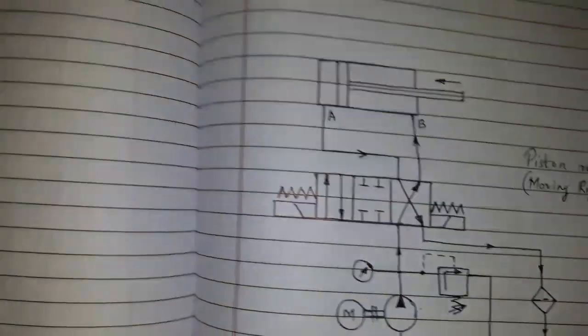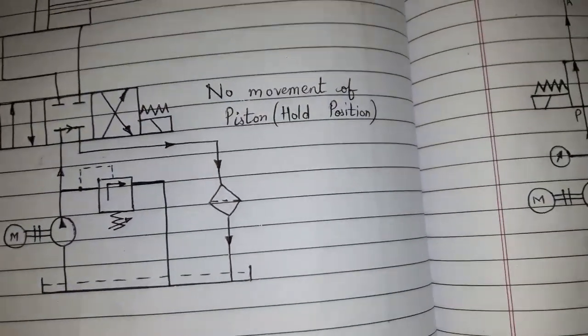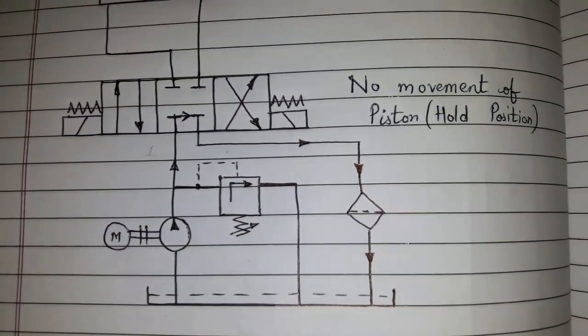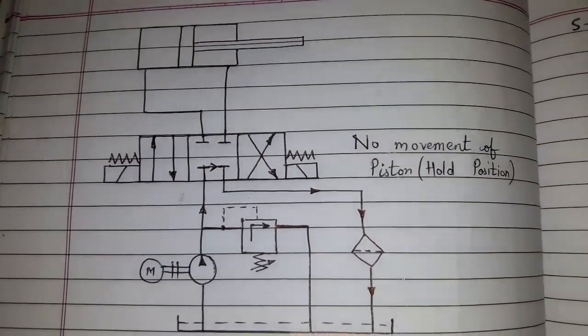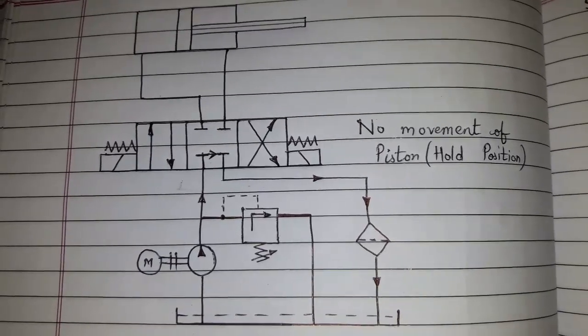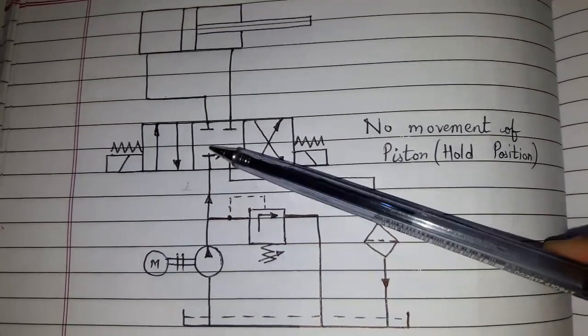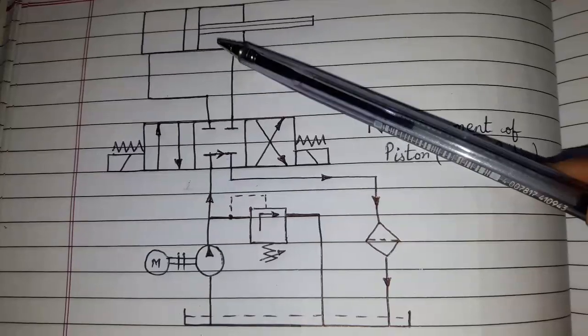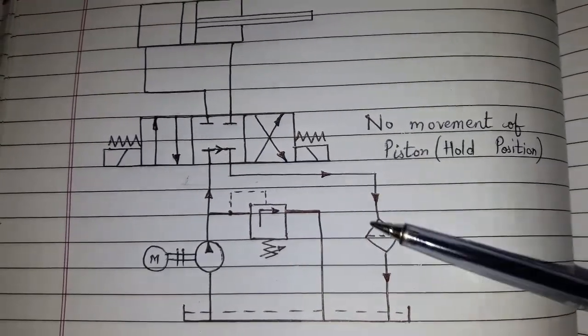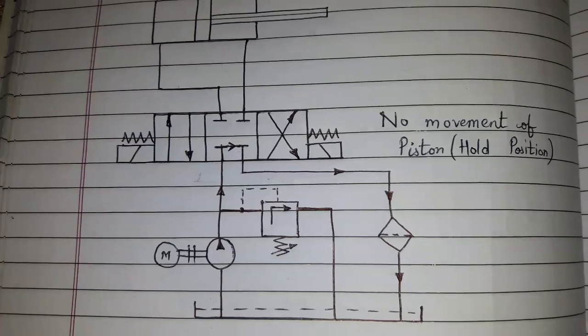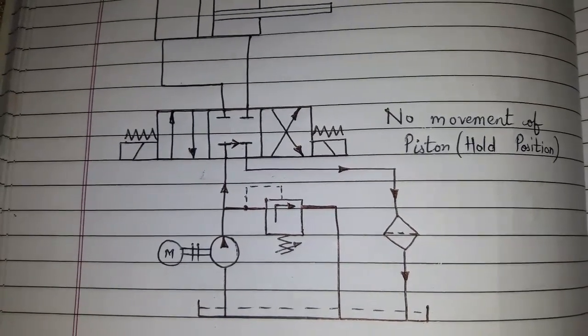Now the third motion of the piston, that is no movement of the piston or hold position. As you can see in this position, pressurized oil is not going to the DA cylinder. It is returning to the tank. This is called hold position.